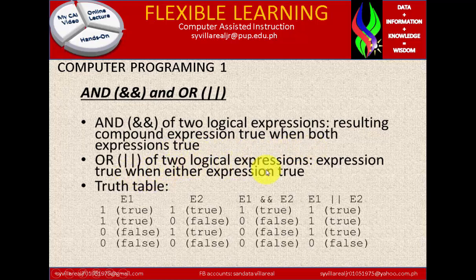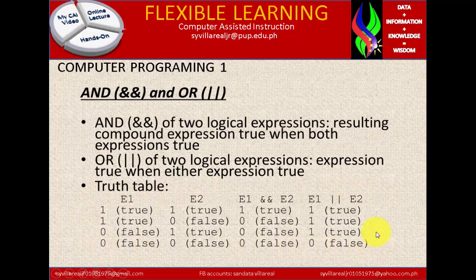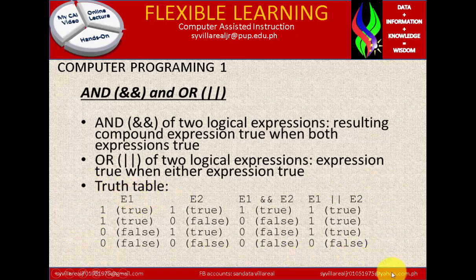AND of two logical expressions results in a compound expression that is true only when both expressions are true. OR of two logical expressions results in an expression that is true when either expression is true. The truth table shows the correct answers for all logical expressions. This is important — you need to memorize this. Otherwise, every time there is a complex logical expression, you can make a mistake. By memorizing this, you won't have a problem with the formula.